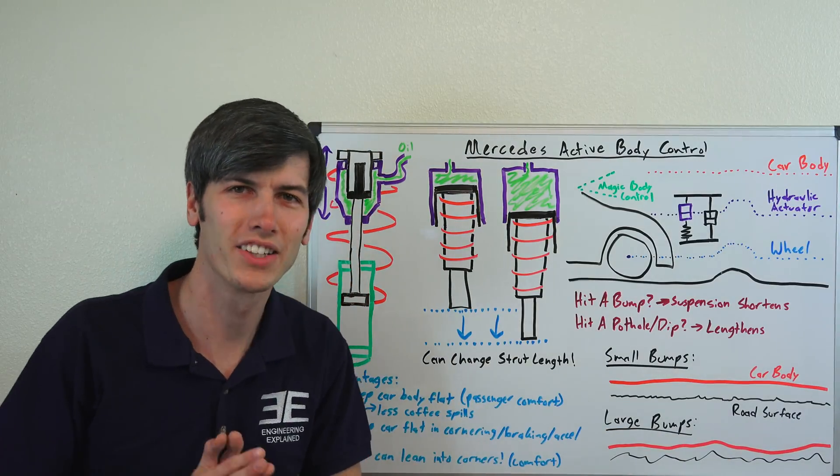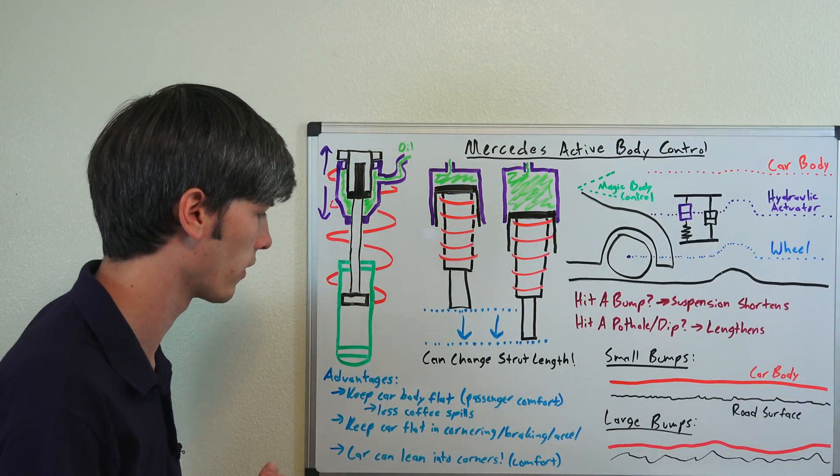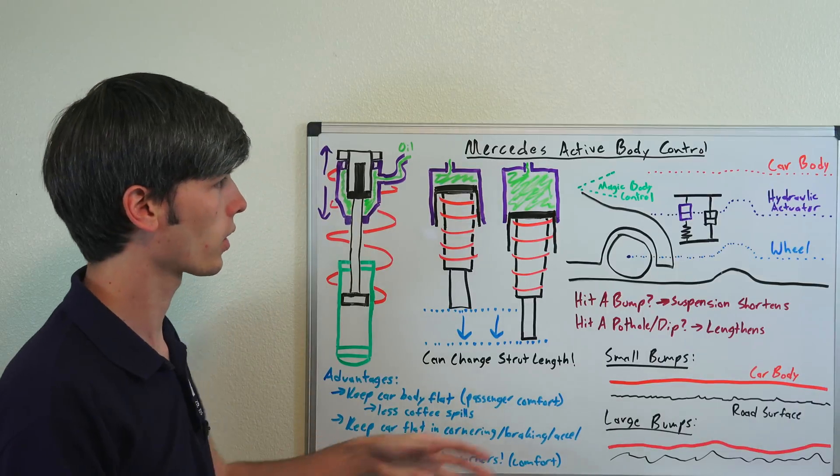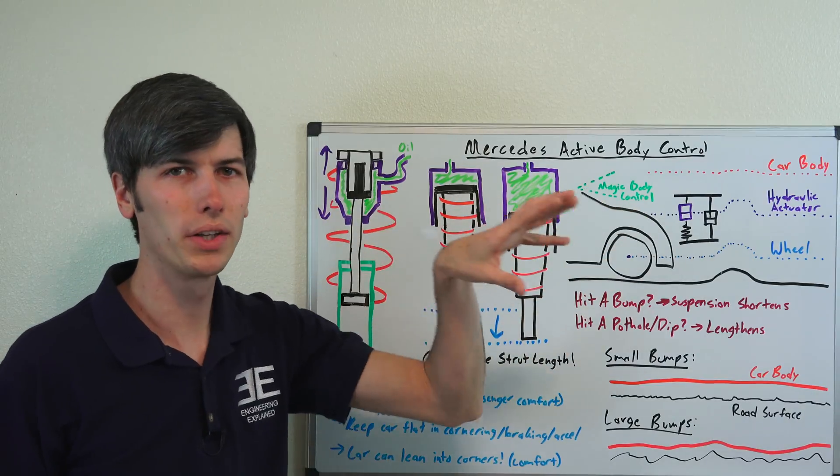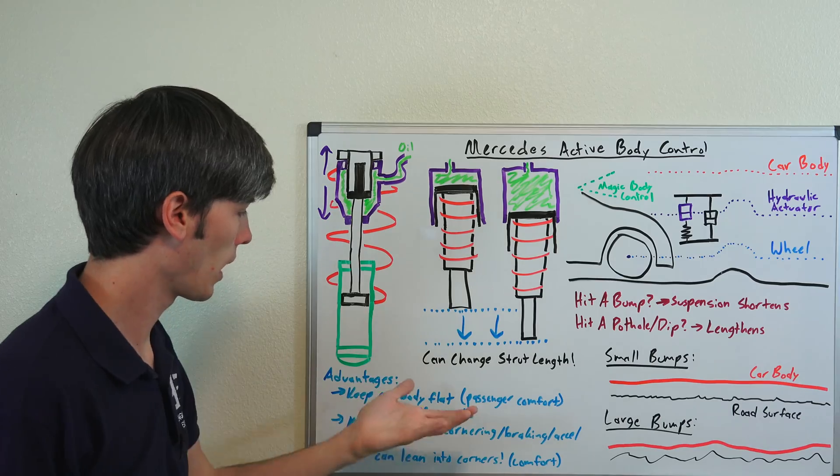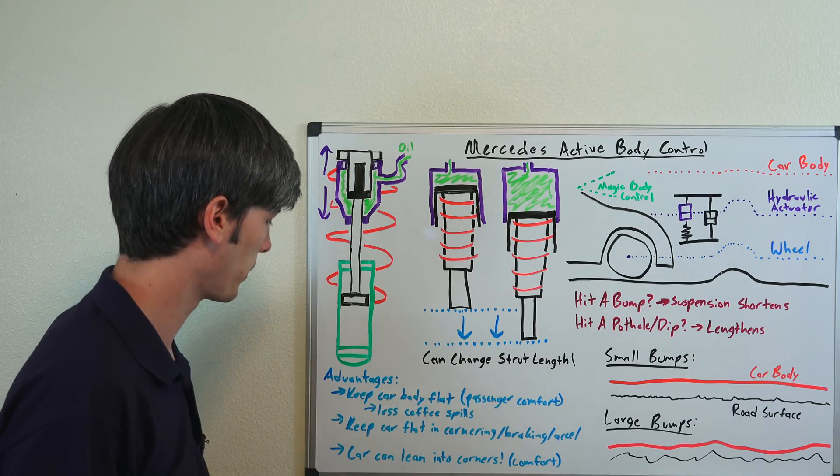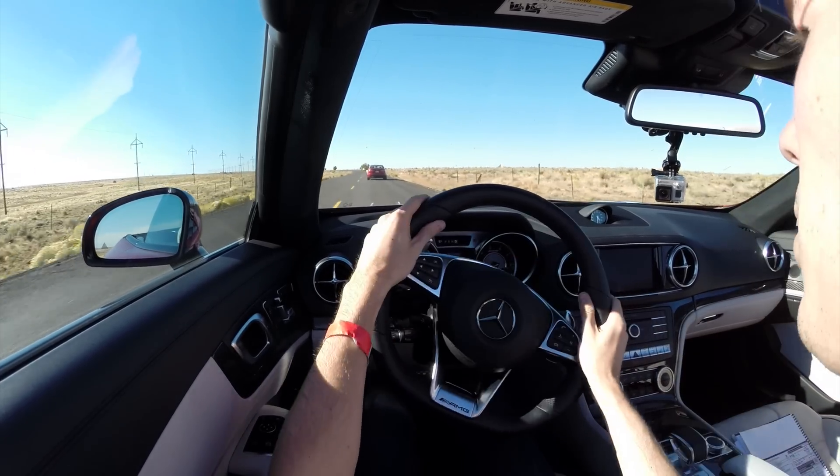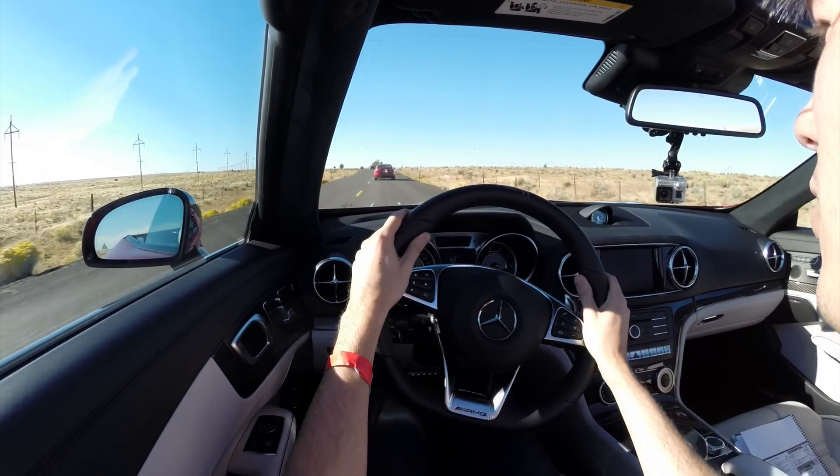What are the advantages of using a system like this? The biggest thing is passenger comfort, kind of the extreme level of passenger comfort. Because the body of the car really isn't moving much, so you're able to keep the body really flat. You won't spill your coffee.